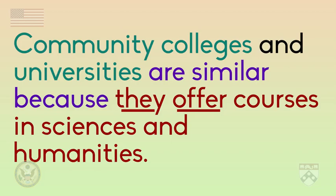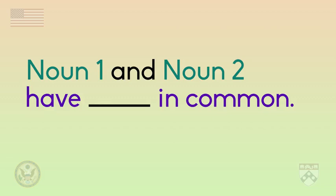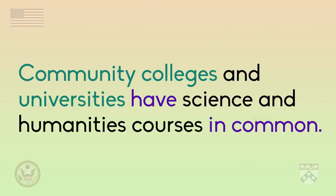Phrase number two: 'have something in common.' Doctors and teachers have skills and interests in common. Again, the two nouns being compared are doctors and teachers, in green. Then you see the phrase 'have blank in common,' in purple. The nouns — skills and interests — go in the middle of the phrase. It is important to note that you must use at least one noun in the middle of this phrase. Here is another example: 'Community colleges and universities have science and humanities courses in common.'